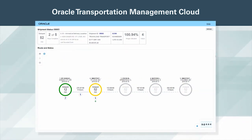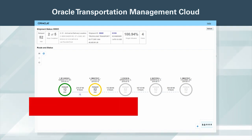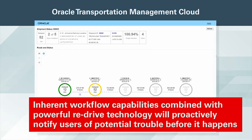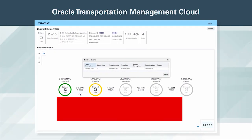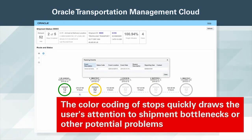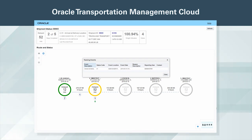Leverage OTM's comprehensive end-to-end order and shipment visibility capabilities to stay informed of what's happening with your goods in transit. Inherent workflow capabilities, combined with powerful re-drive technology, will proactively notify users of potential trouble before it happens. The color coding of stops quickly draws the user's attention to shipment bottlenecks or other potential problems. Details of individual tracking events occurring at or between stops can be researched by clicking the numbers below the stops or legs of the move.